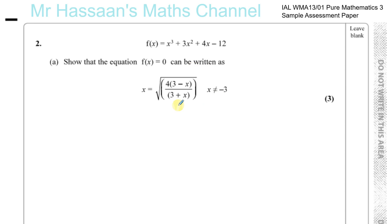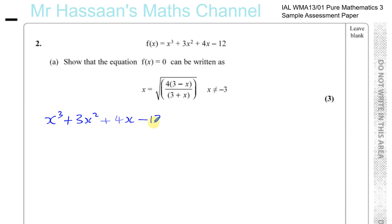x equals the square root of 4 times (3 minus x) over (3 plus x), and x cannot equal minus 3. In order to show this, we look at the equation. They've taken f(x) equals 0, so the first step is to write x cubed plus 3x squared plus 4x minus 12 equals 0. One of the x's has been made the subject, and we can see it involves a square root, so something involves x squared.